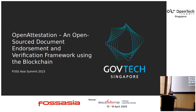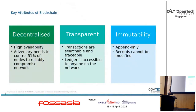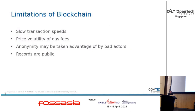Open Attestation is an open source document endorsement and verification framework using the blockchain. When we hear about blockchain, most people think about cryptocurrency. For Open Attestation, what we're interested in is how the key attributes of blockchain can be applied to document endorsement and verification. There are certain limitations of the technology, but we think the way we are designing Open Attestation can help us get around them or make them less of an issue.